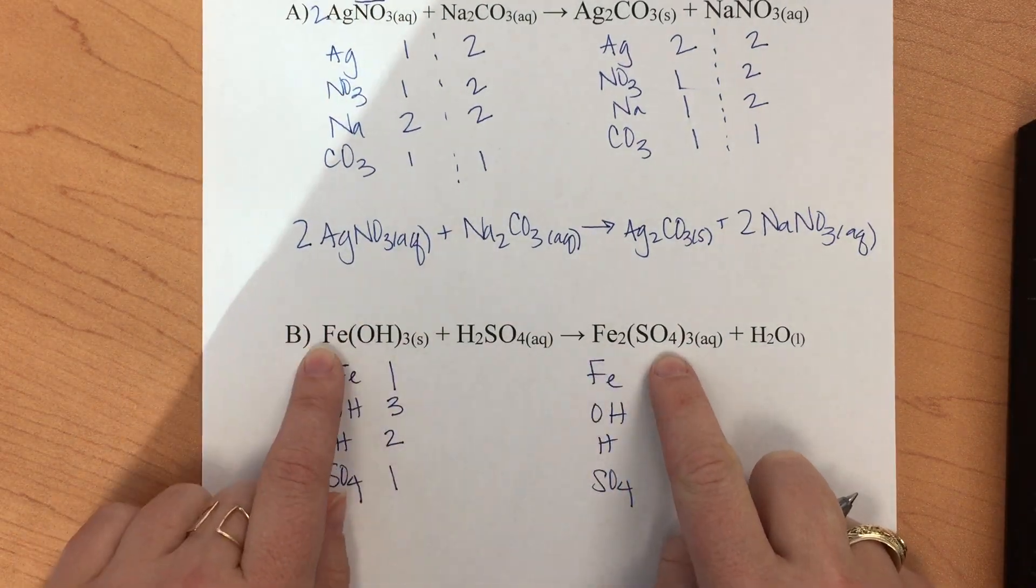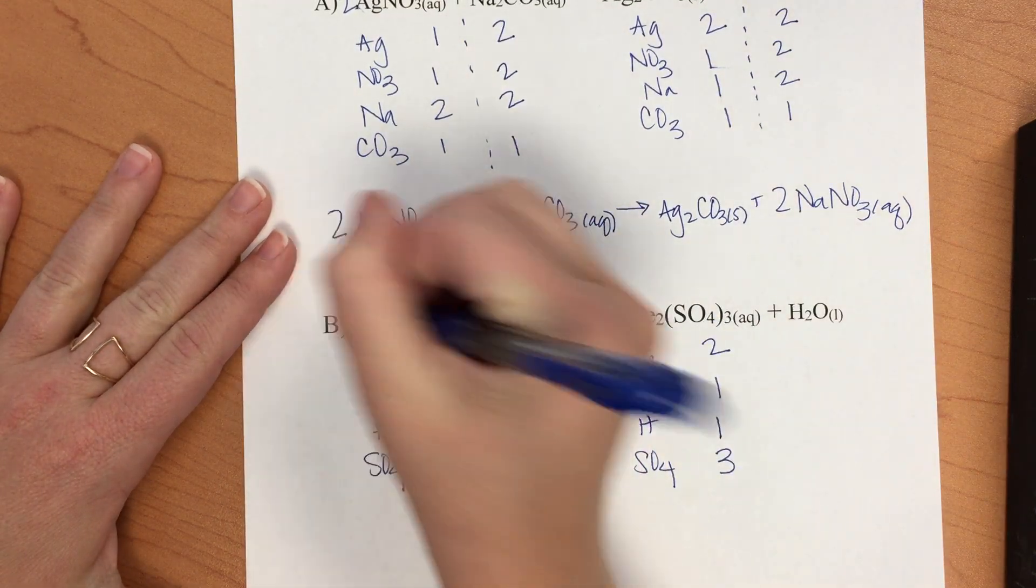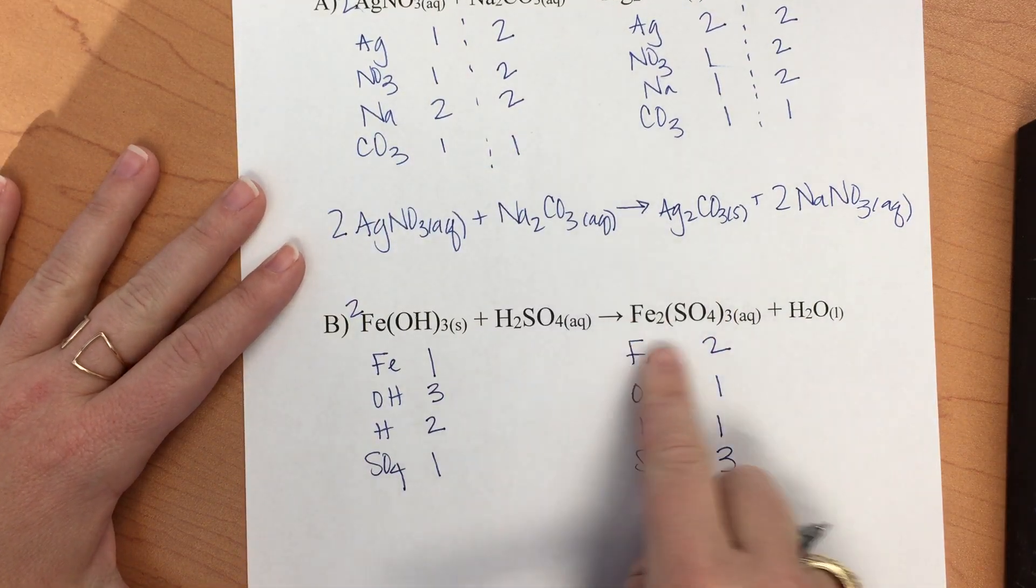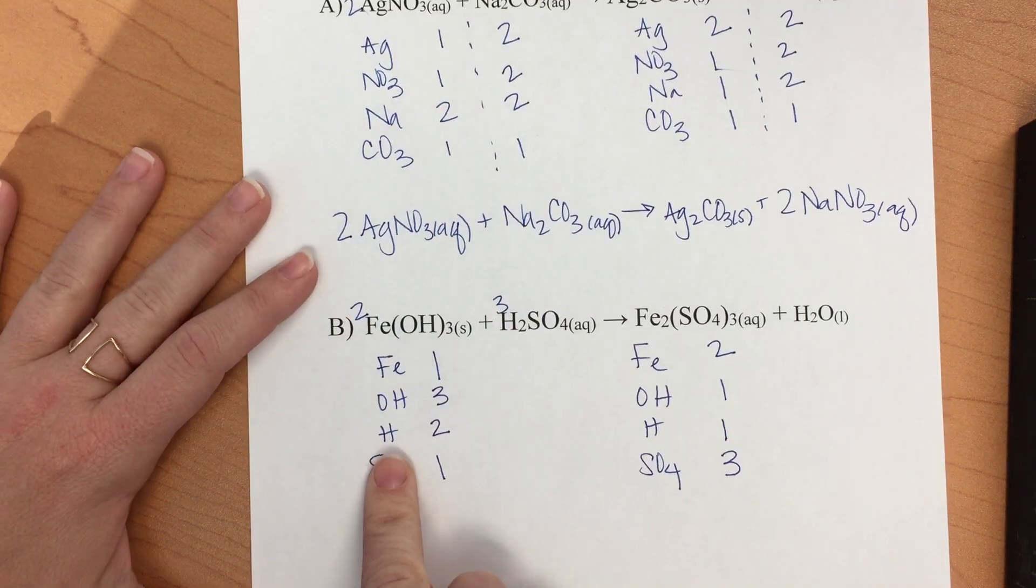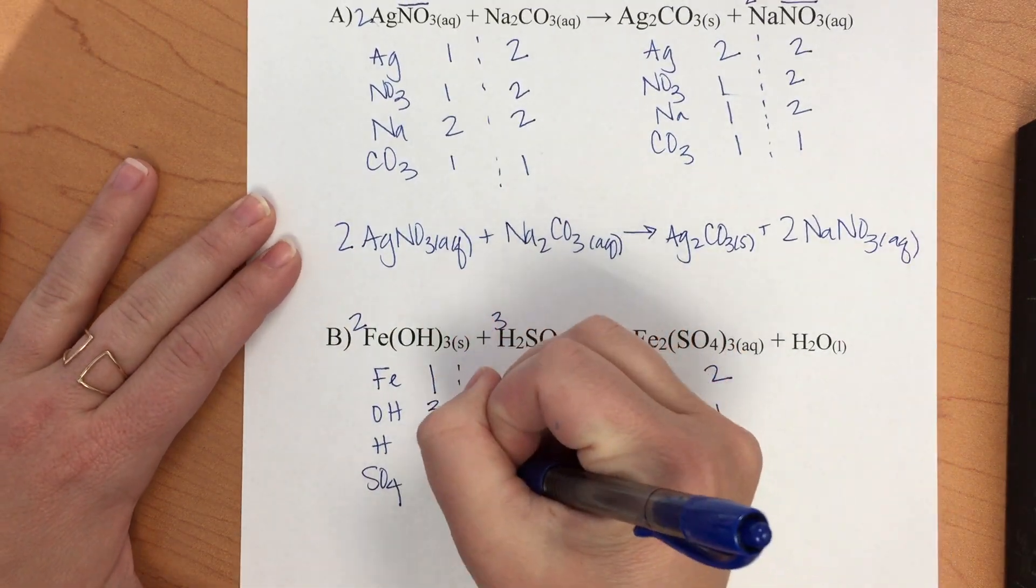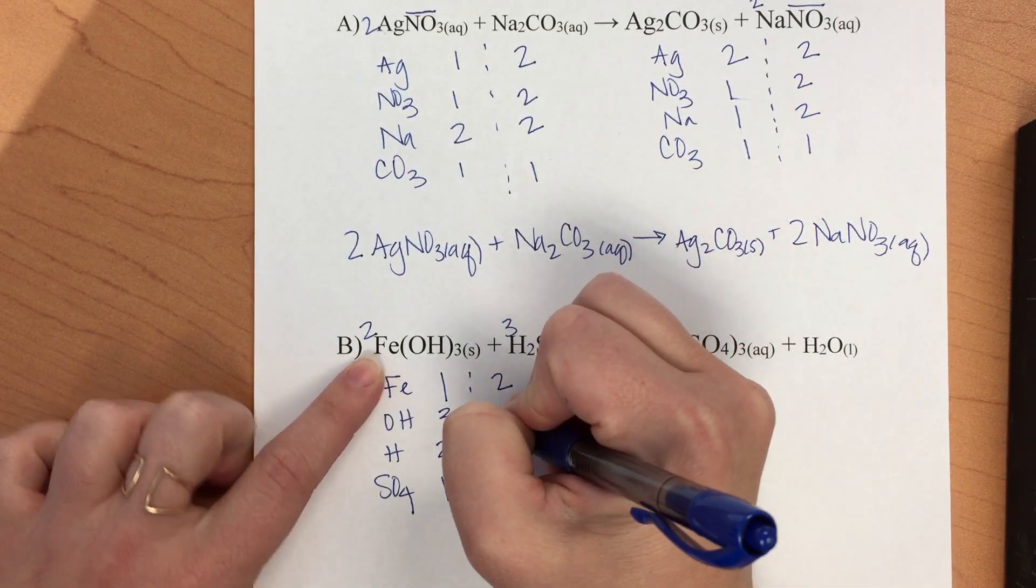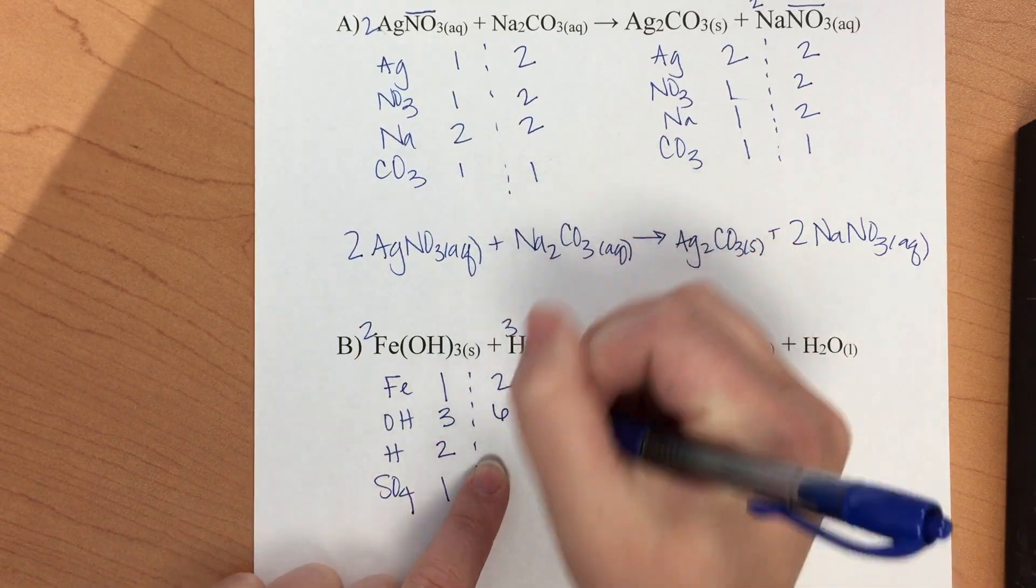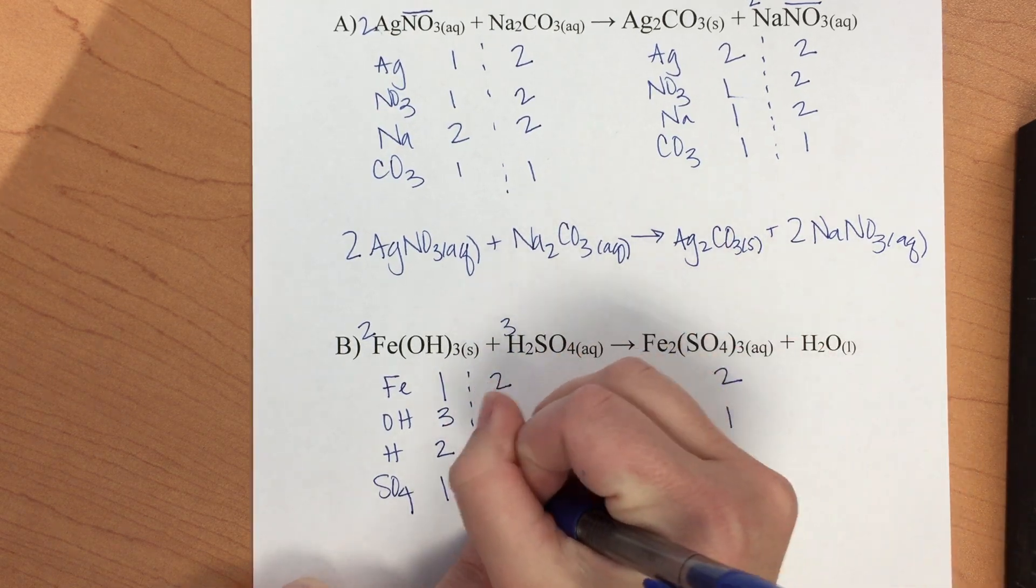In this case, we will have two irons, we will have six OHs, we will now have six hydrogens, and three sulfates. Look at this—now we have balanced both the iron and the sulfates, and we just need to balance the waters.